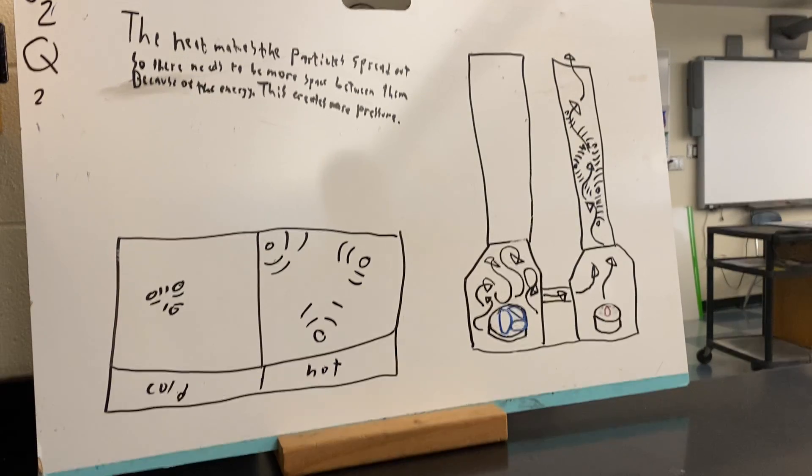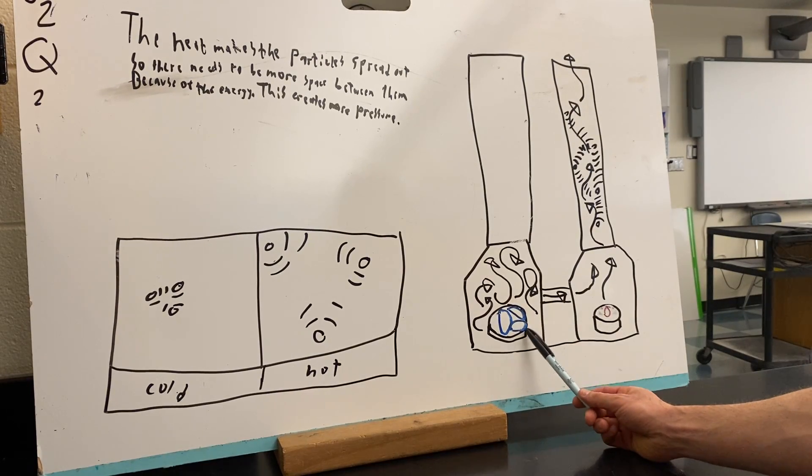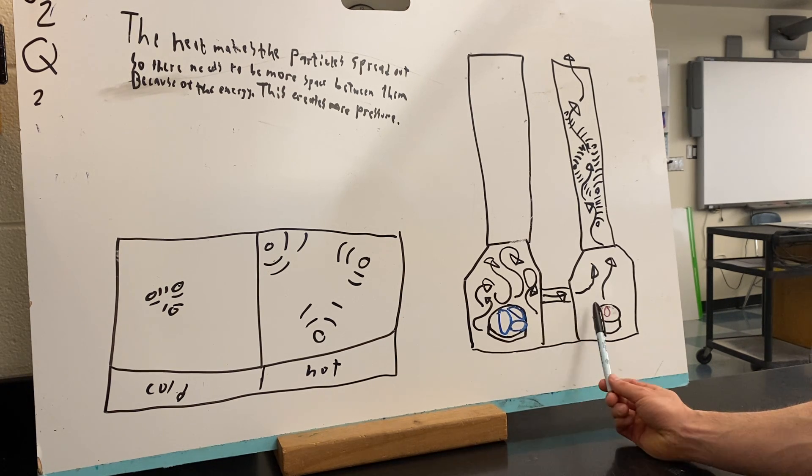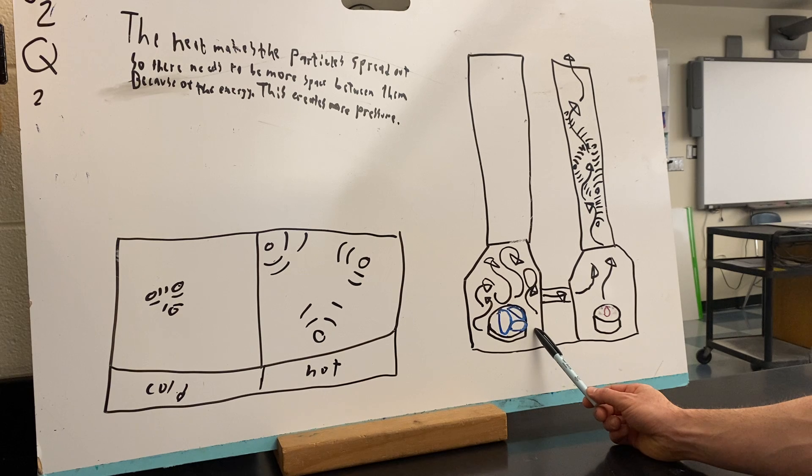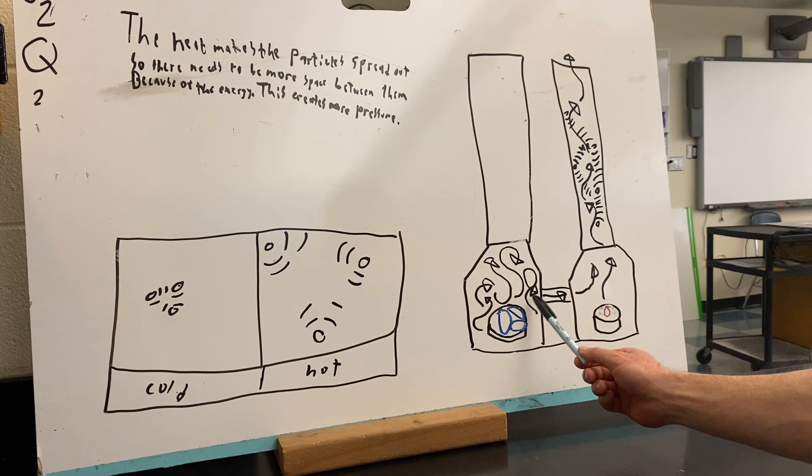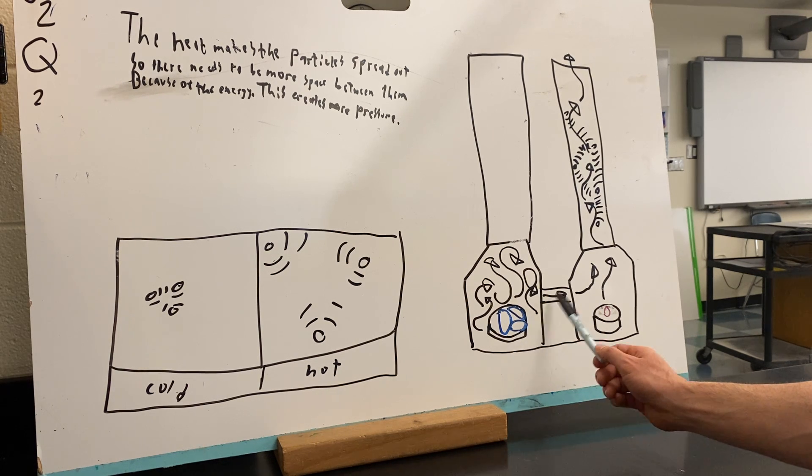All right, for our lab yesterday we had cold and hot, and we saw the smoke flowed from cold to hot. Particles are more compact in the cold and less compact in the hot. The cold is a high pressure system, the hot is a low pressure system. Things flow from high pressure to low pressure.